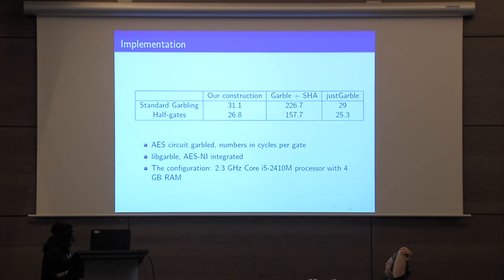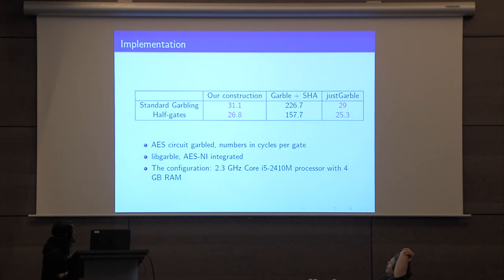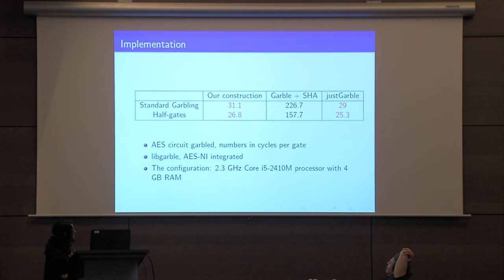We implemented our construction using the libgarble library on a system with AES-NI integrated. This table shows numbers in cycles per gate for garbling the AES circuit. We compare our construction against garbling a circuit and then applying SHA from the OpenSSL library, and note that our construction is very close to the number for just garbling the circuit itself.